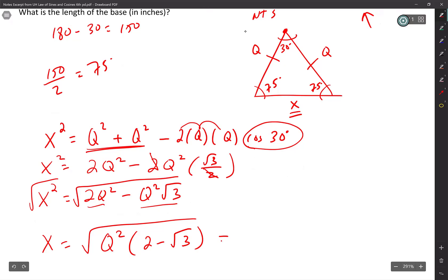And hopefully you guys remember. Look, this is actually kind of fun. The square root of Q squared, that's just Q. So I'm just going to write Q square root, and I'm going to write 2 minus square root of 3. What did you guys think? And that's it. We're done. That's the answer.